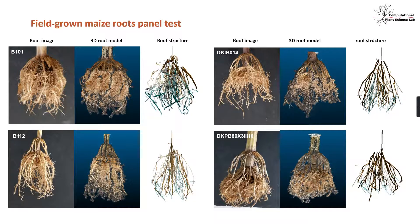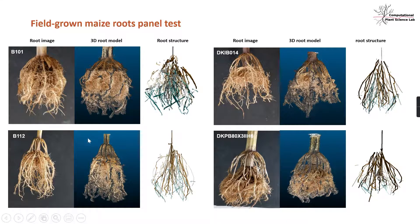We validated our 3D root phenotyping system on a test panel of 12 contrasting maize genotypes. Here I showed you representative samples from 100 maize roots — these 12 samples with different genotypes and their computed root structures are shown here. In this column we're showing the original root image captured by our 3D root scanner. In this column I'm showing the 3D root models generated by our algorithm. And this is the root structure computed by our system — it is very detailed structure and measurement of the root system in the field. And here is the root genotype.